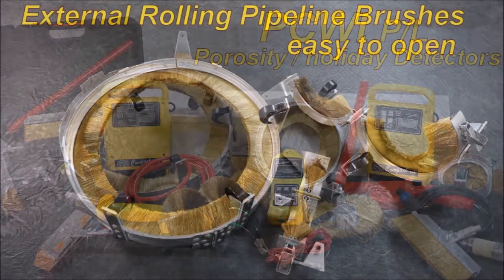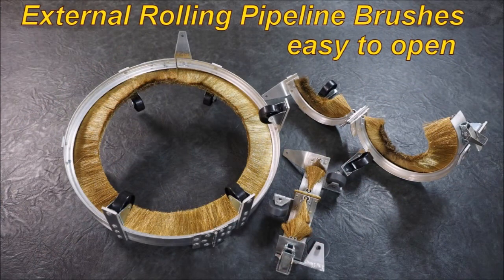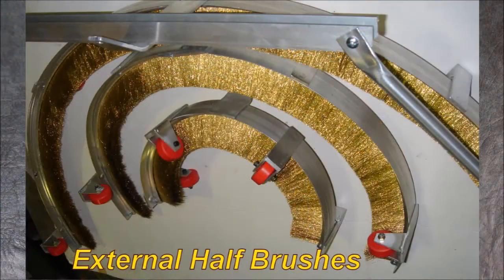This is the rolling pipeline brushes, easy to open, clip on the pipe and move along. This is a range of external half brushes.